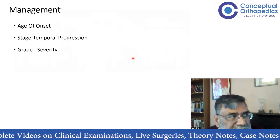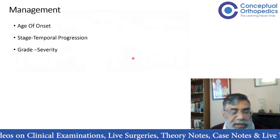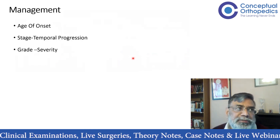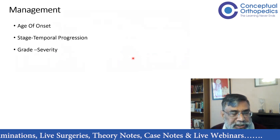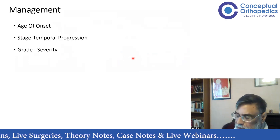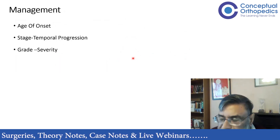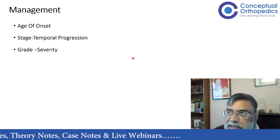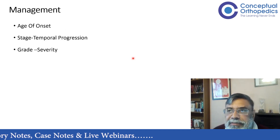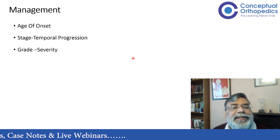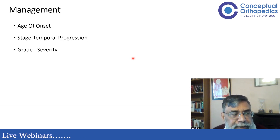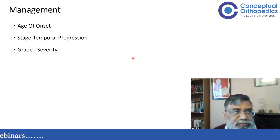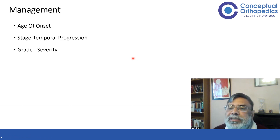The treatment of Perthes depends on age of onset. When seeing a patient, you need a good history — when did the first symptom start, that gives the age of onset. Then stage of progression is important. We keep coming back to the four stages: avascular necrosis, fragmentation, re-ossification, and remodeling. What are the four stages?